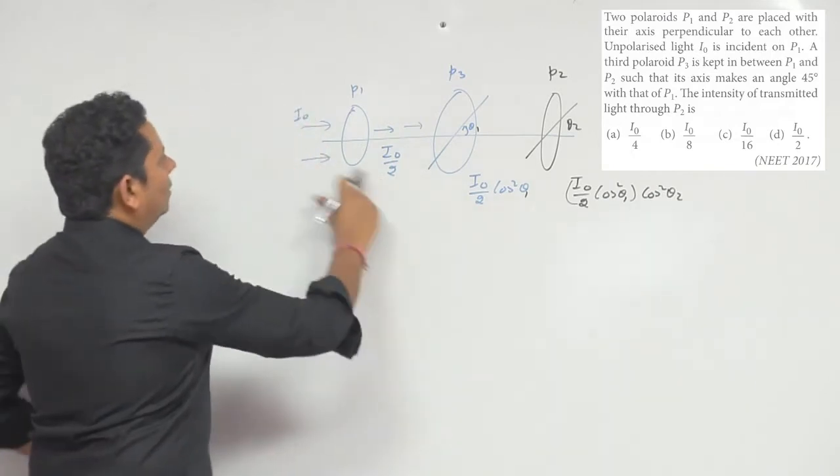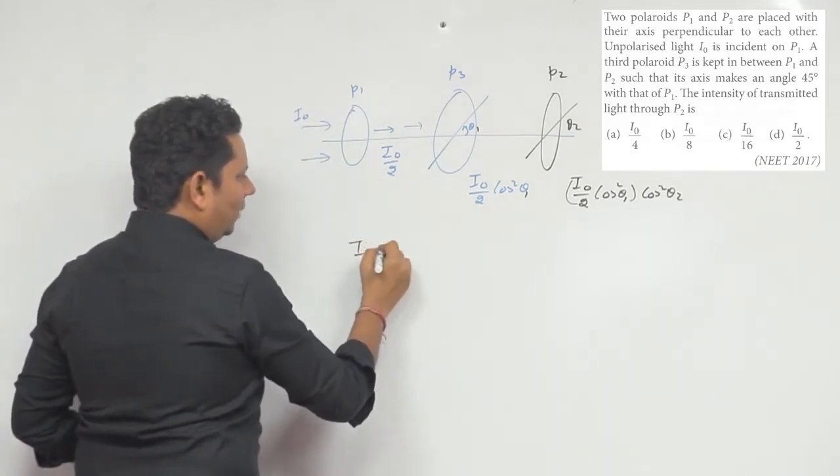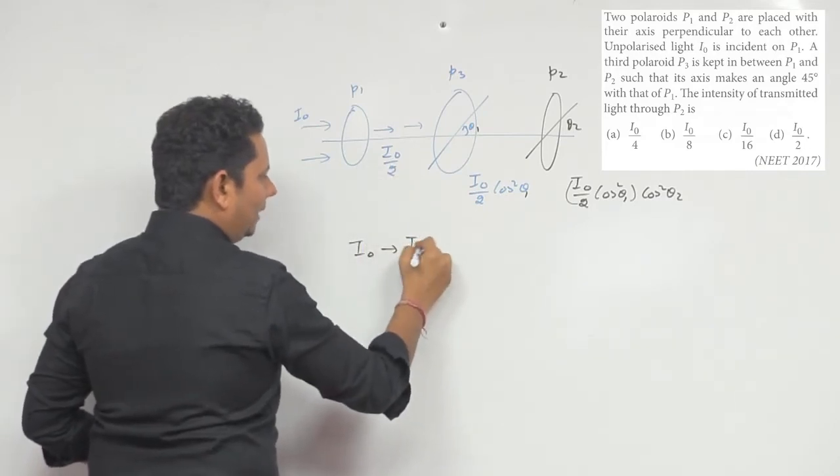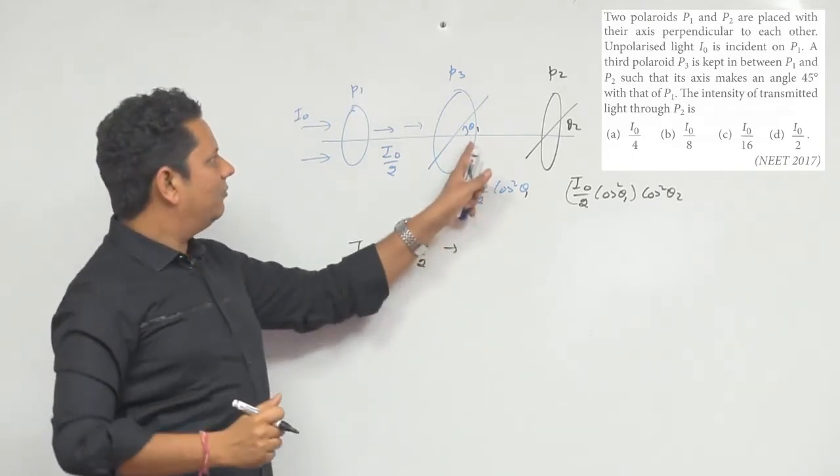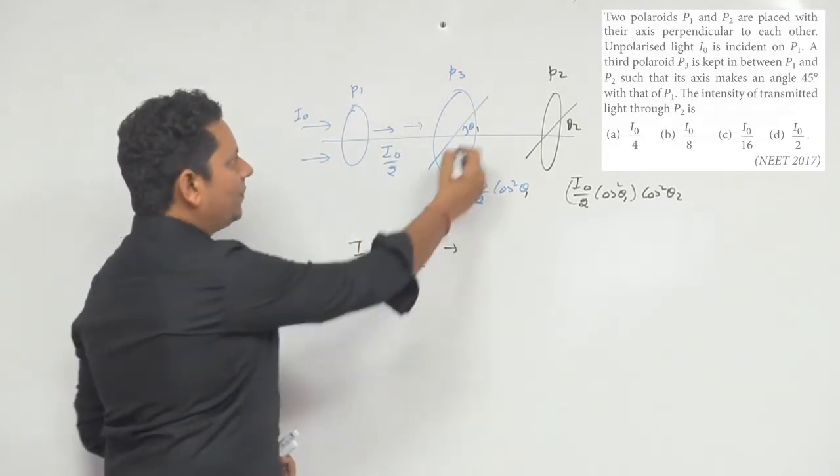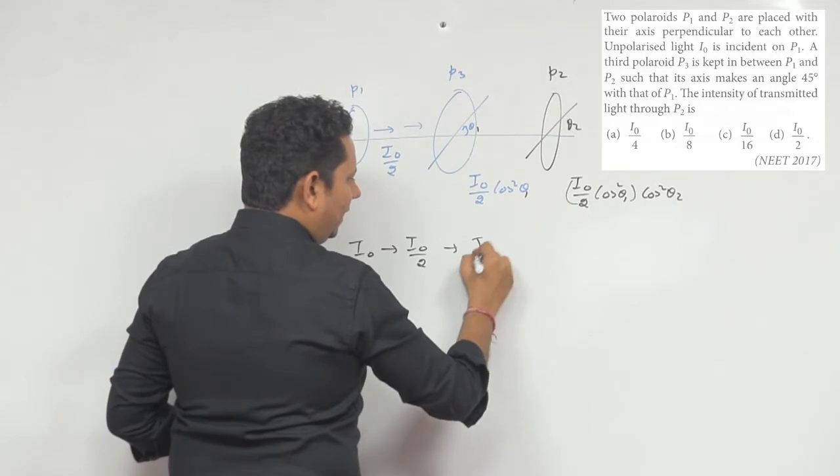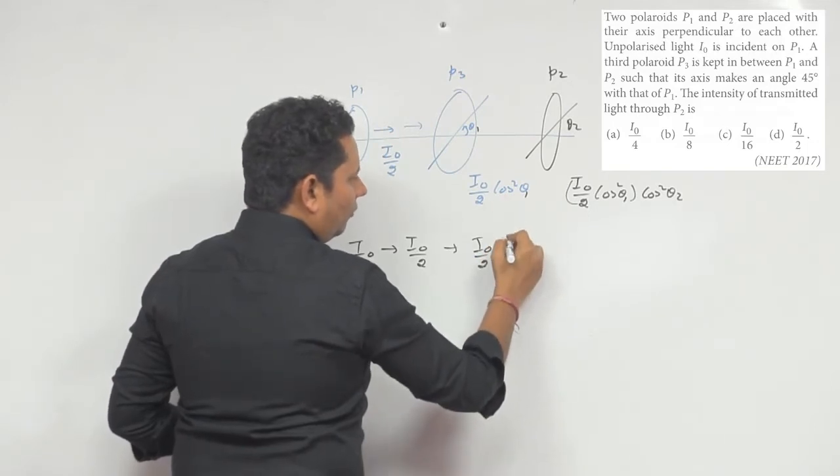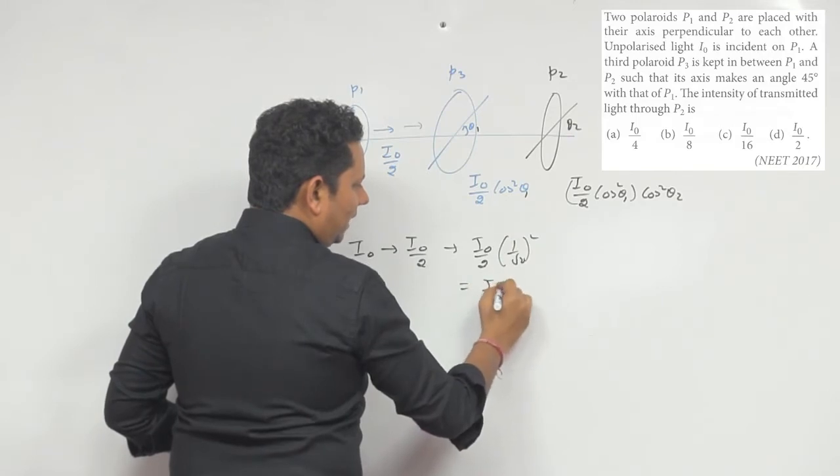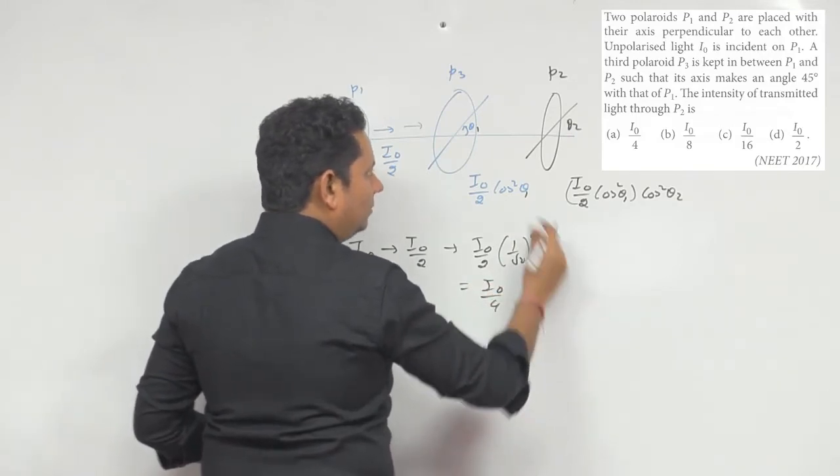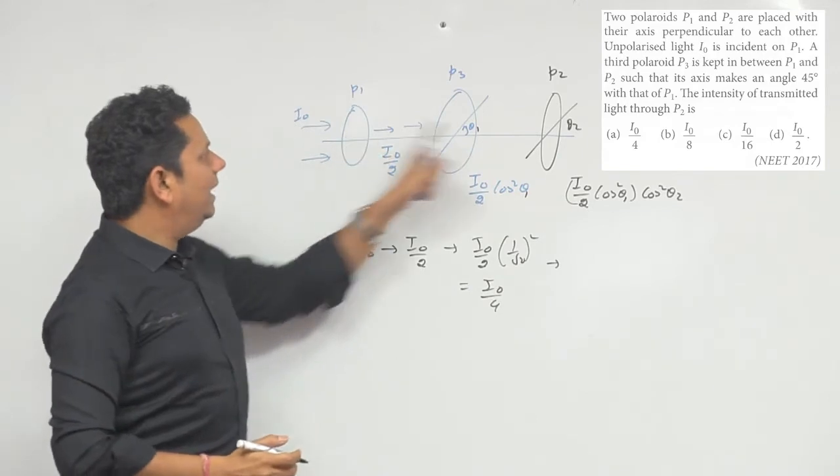Jo pehle incident hai woh hai I0, wo yahan par aapki banegi I not by 2. Uske baad jo second polarizer se jaegi, kyunki iska angle 45 degree hai in dono ke beech mein, to yeh wali value ho jaegi I not by 2 cos square 45, yani ki 1 by root 2 ka square, to iski value ban jaegi I not by 4.